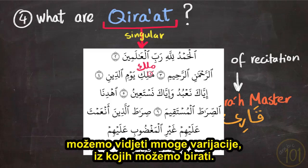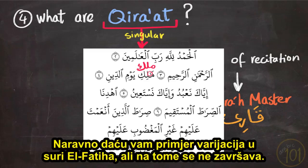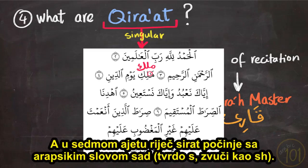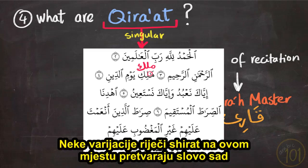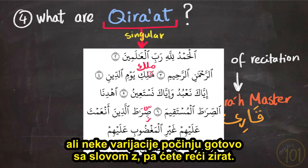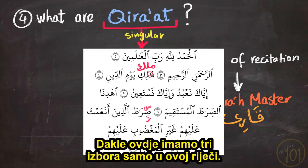In Surah Al-Fatiha we can see that there are many variations to choose from, representing the seven ahroof of the Quran. For example, the word 'malik' could be said as 'malik' or 'mālik.' In the seventh verse, the word 'sirat' starts with a sad — some variations turn the sad into a seen, so you would say 'sirat,' while some variations turn this sad into an almost zay, so you would say 'zirat.' So here we have three choices in just this one word.